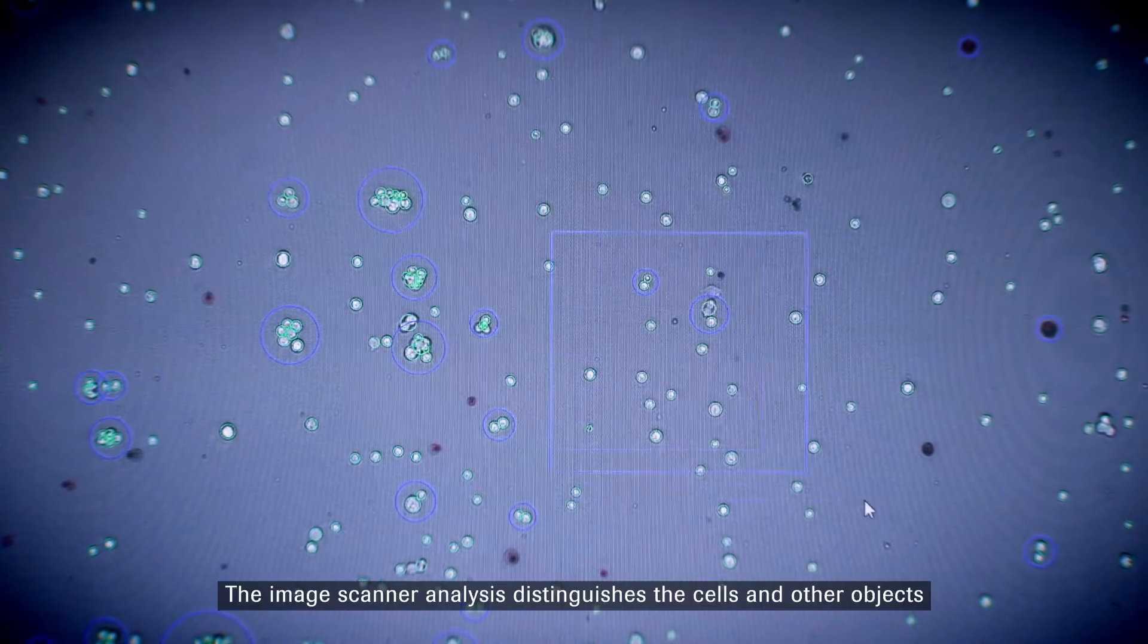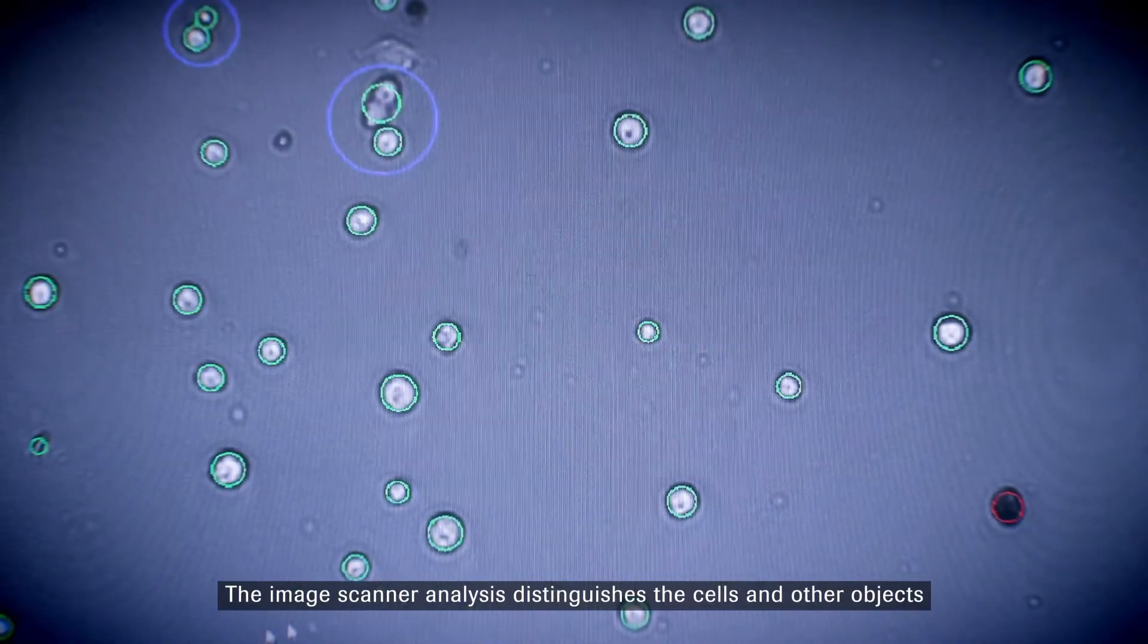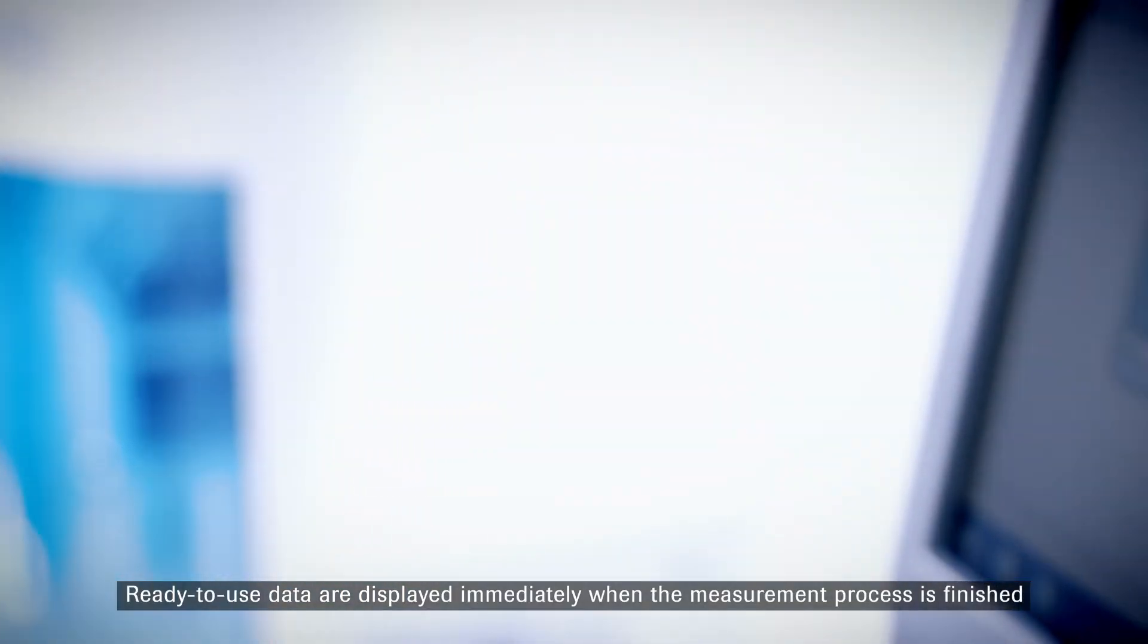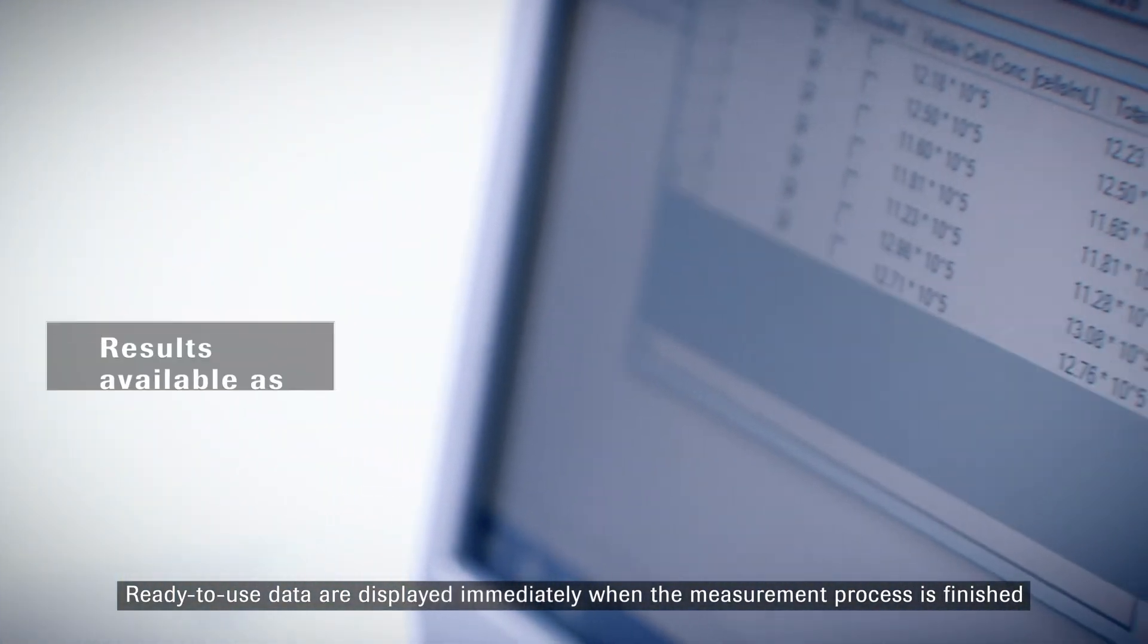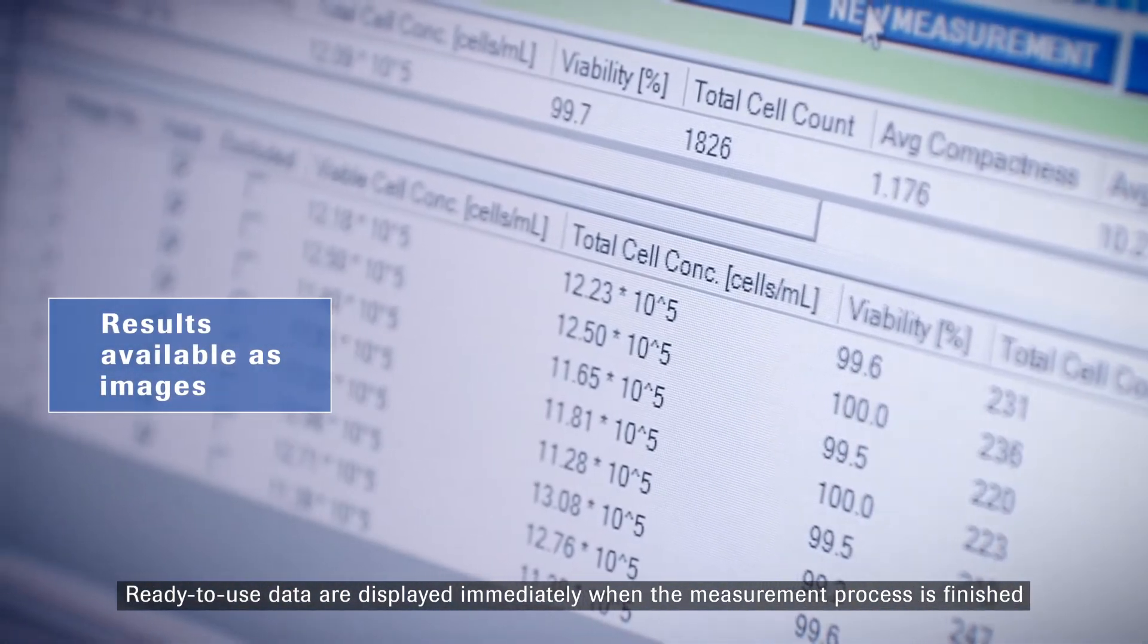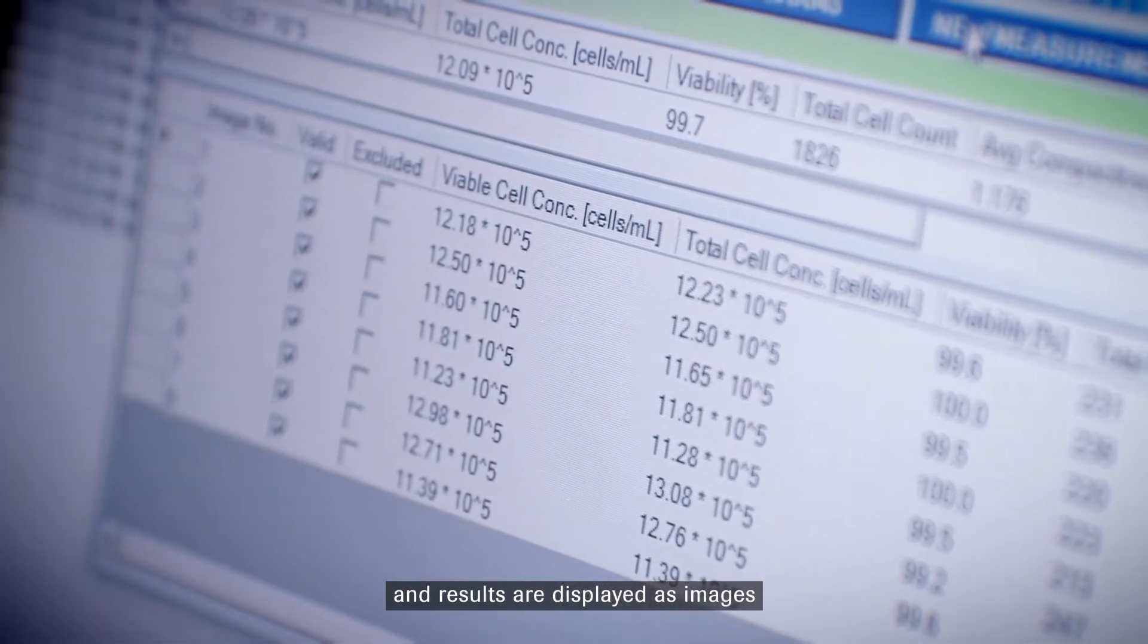The image scanner analysis distinguishes the cells and other objects. Ready-to-use data are displayed immediately when the measurement process is finished and results are displayed as images.